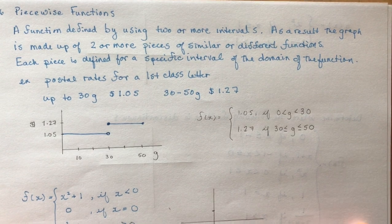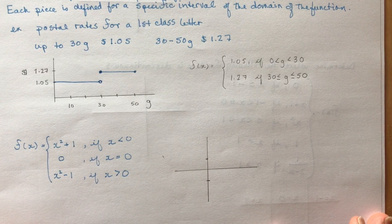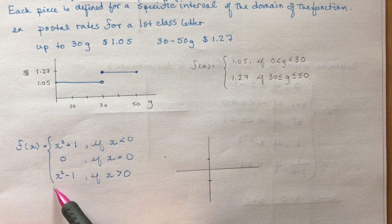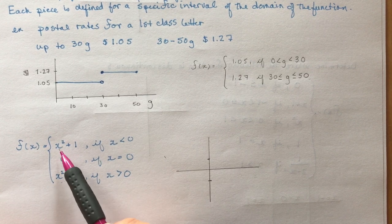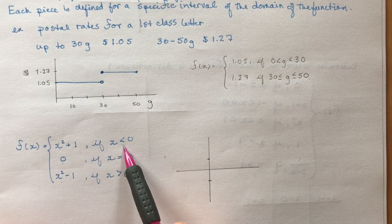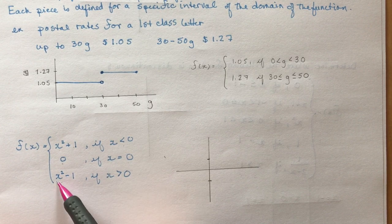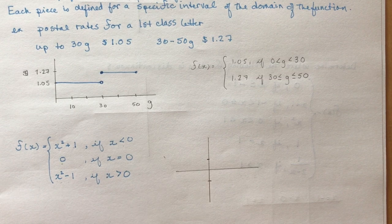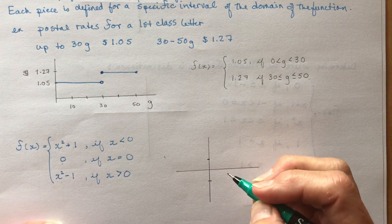Now let's look at one more up your alley in terms of what you'll see in your homework. This piecewise function has three different parts: x² + 1 if x is less than zero, zero if x equals zero, and x² − 1 if x is greater than zero. We have three things to consider.